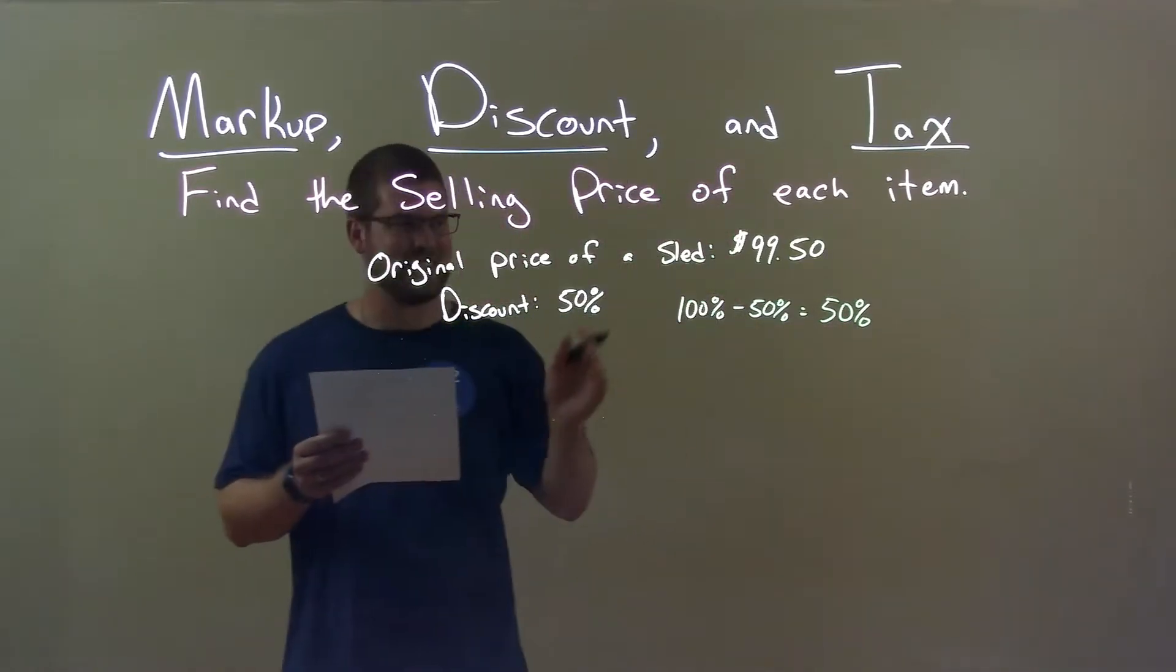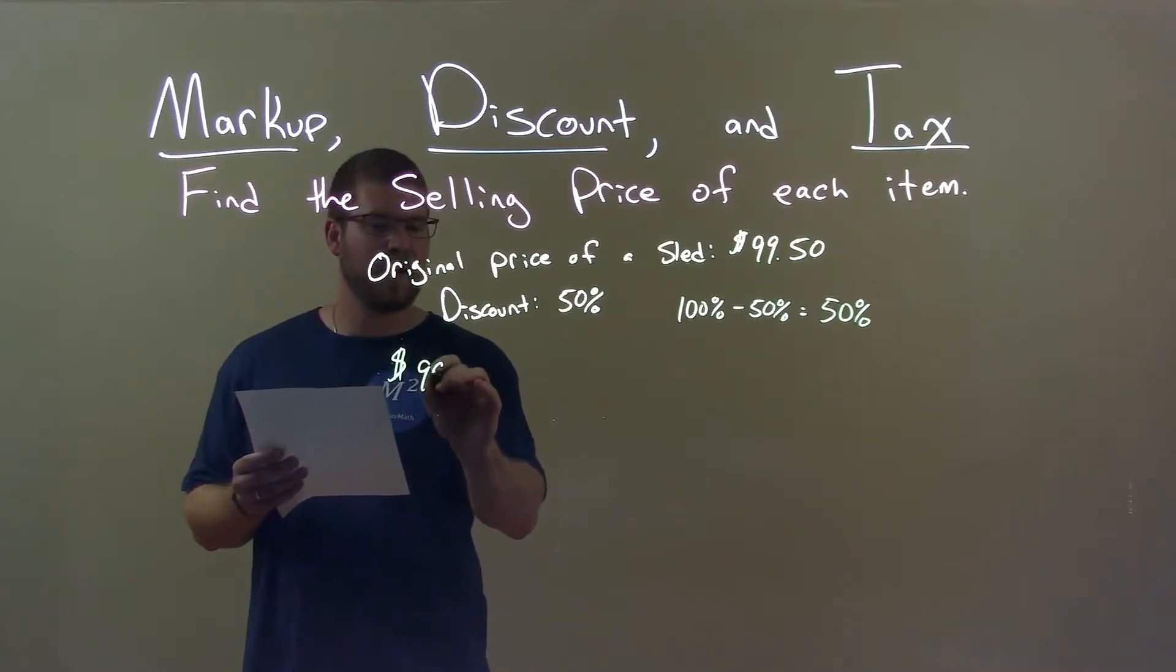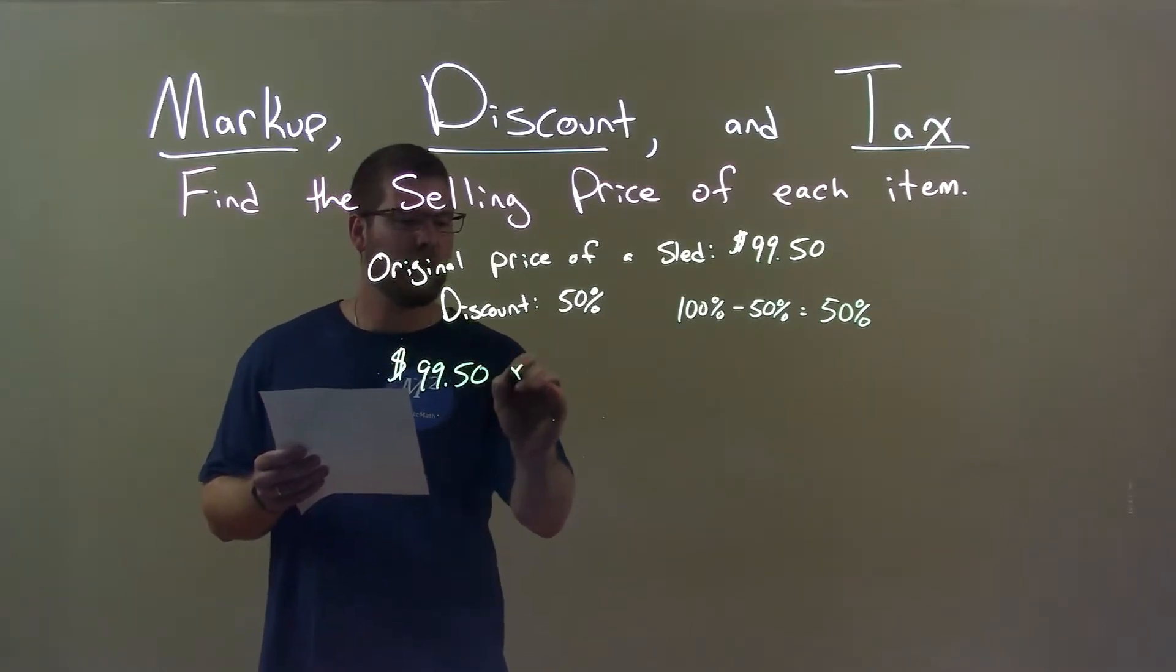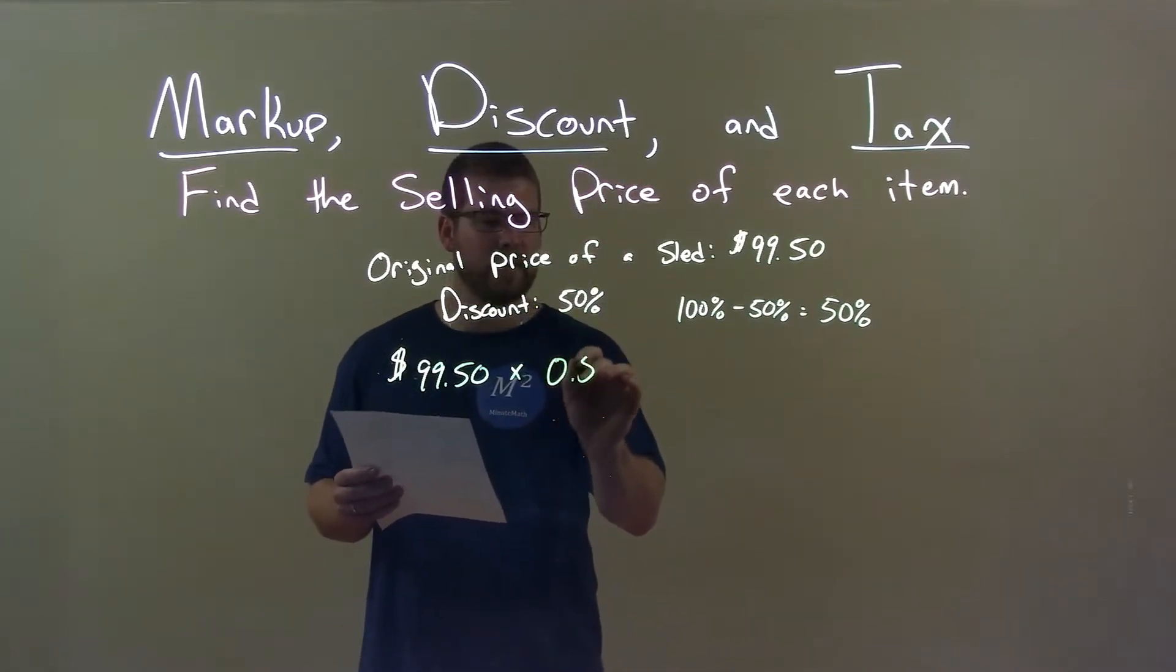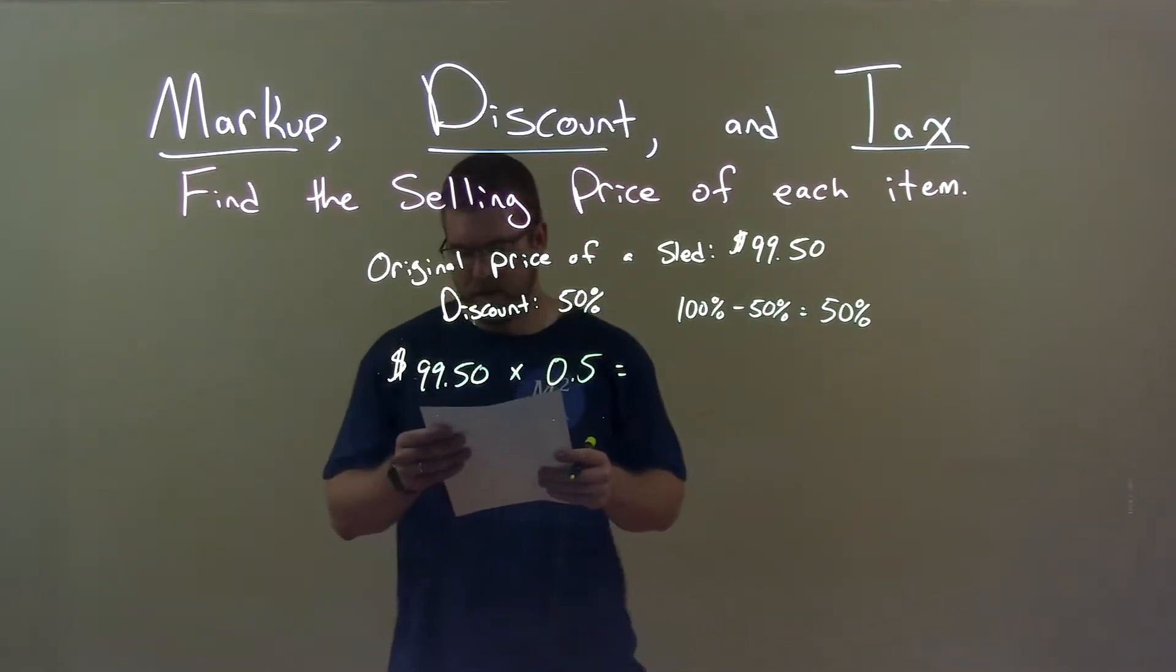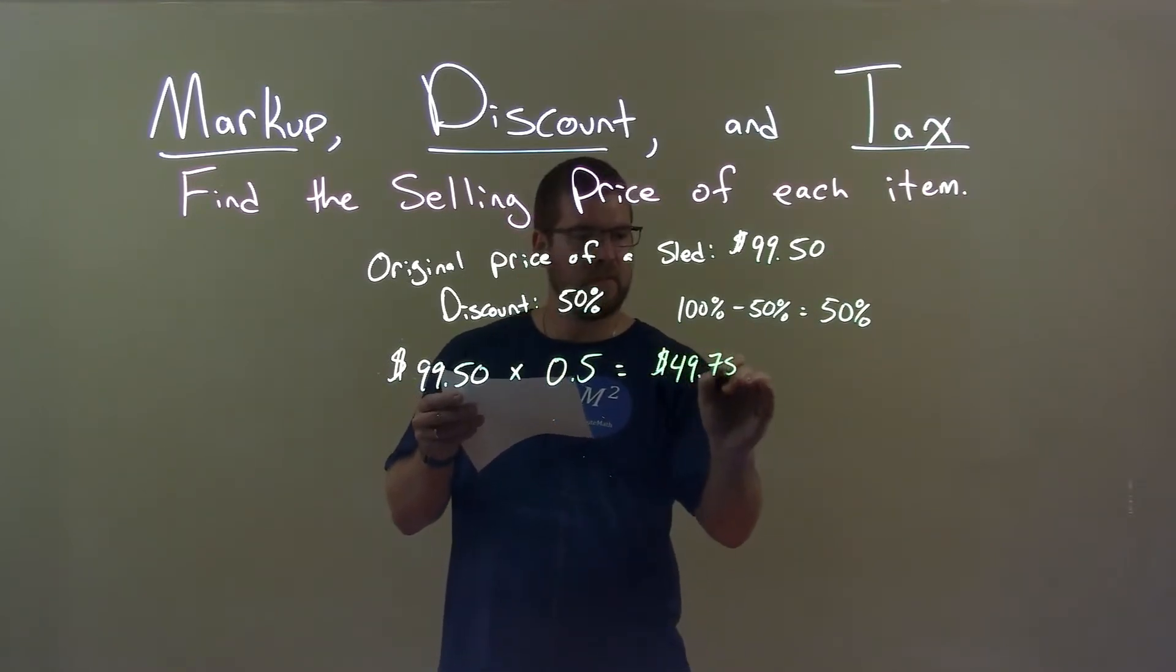It kind of turns out that way in this calculation here. So now we take the purchase price, or the original price, of $99.50. We multiply that by what percent we're going to pay as a decimal, so 0.5, and that gives us a discounted price of $49.75.